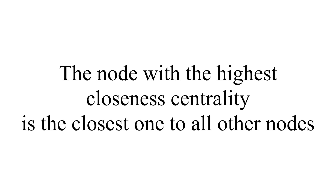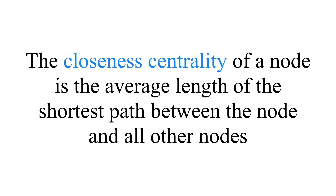The next measure is closeness centrality, which is defined by the name — it's the node closest to all the other nodes in terms of the shortest average path length. Like degree centrality, closeness centrality can be calculated on a network where we don't know the direction of the ties.